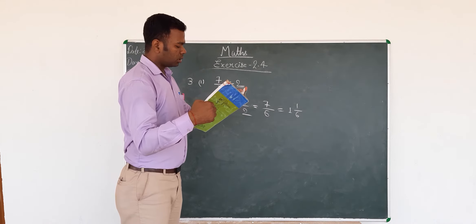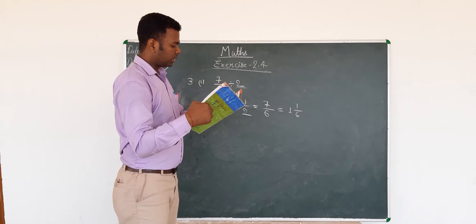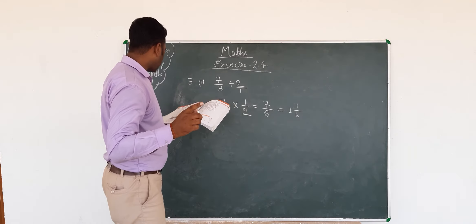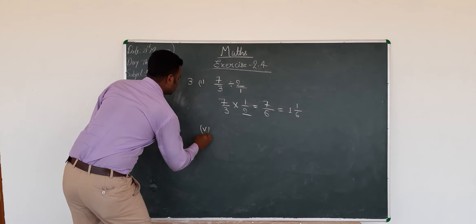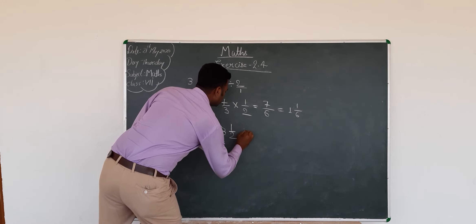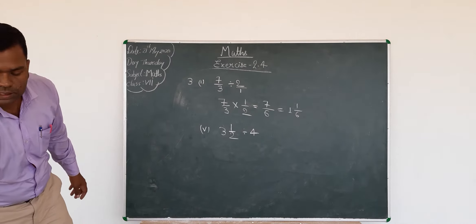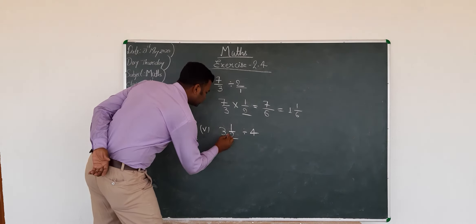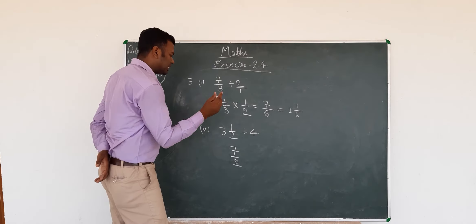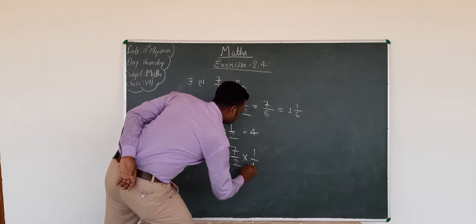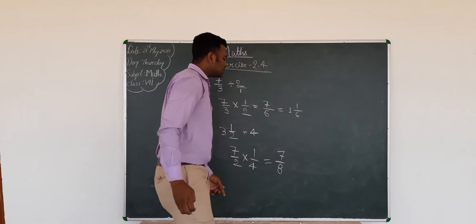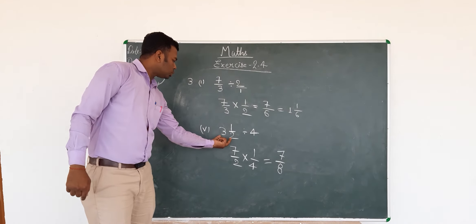The next problem is the 5th problem of question 3: 3 1/2 divided by 4. First, we will change this mixed fraction into improper fraction. 3 times 2 is 6 plus 1 is 7, so 7/2 divided by 4. Now change this into multiplication, that is 7/2 multiplied by 1/4, which equals 7/8. This is an improper fraction and this is the answer.